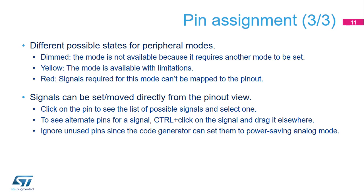Signals can be set or moved directly from the pinout view. Click on the pin to display the list of possible signals and select one. This works for GPIOs which have no peripherals assigned. To see alternate pins for a signal, hold the control key and click on the signal. You can then drag and drop the signal to the new pin while holding the control key.